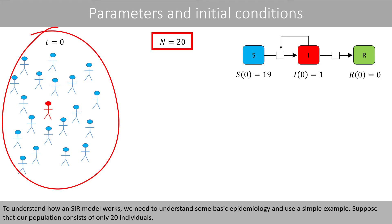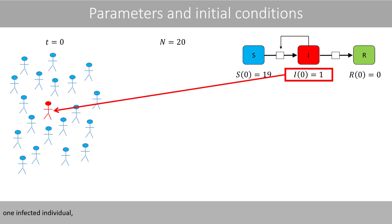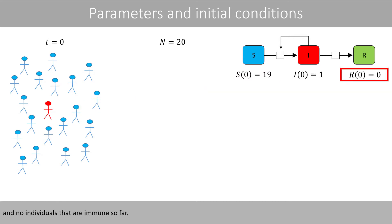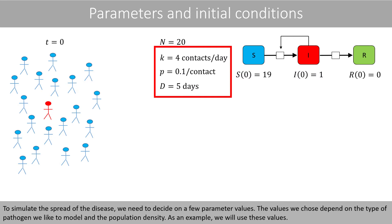Suppose that our population consists of only 20 individuals. At time point zero, we have 19 susceptible individuals, one infected individual, and no individuals that are immune so far. Since no people leave or enter the population, the total population size is therefore equal to the sum of the initial values. To simulate the spread of the disease, we need to decide on a few parameter values. The values we choose depend on the type of pathogen we like to model and the population density. As an example, we will use these values.